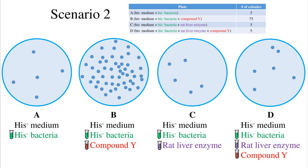How would we explain the results of this Ames test in scenario 2? On plate A there are 5 colonies, plate B has 75 colonies, plate C has 5 colonies, and plate D has 5 colonies. Plate A shows the spontaneous rate of mutation. Plate B's 75 colonies represent a much greater rate than the spontaneous rate of reverse mutation — the parent form of the compound is carcinogenic. Plate C confirms the rat liver enzymes are not mutagenic on their own. Plate D shows that the liver enzymes inactivate the compound so that its metabolite is non-mutagenic.